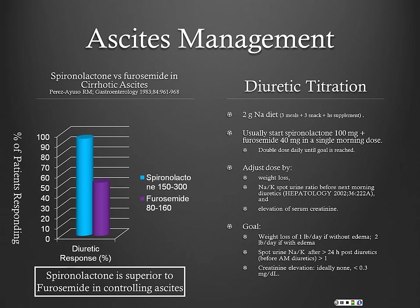For diuretic titration, unless their sodium is extremely low or they're hypotensive, we usually start with 100 milligrams of aldactone and 40 milligrams of Lasix. We double their dose every three to four days, and we use their urine sodium-to-potassium ratio and weight loss to guide titration.